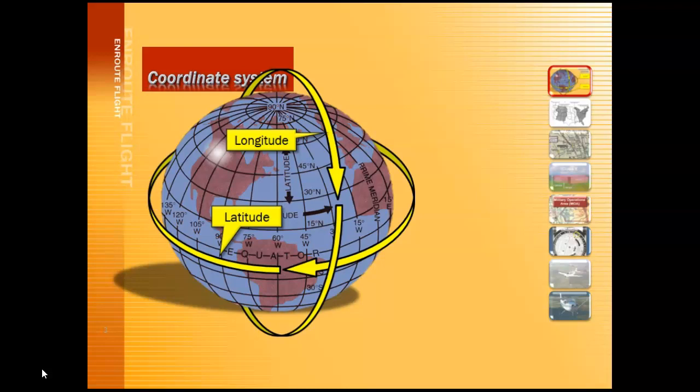Lines of longitude start at the prime meridian, which passes through the royal observatory in England, and they move east and west from there. Unlike lines of latitude, lines of longitude are not equidistant, but they are divided up into degrees, minutes, and seconds, like latitude.